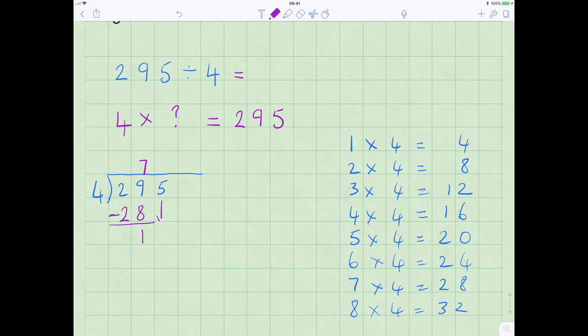So as before, the next step is to bring the 5 down and say how many times does 4 go into 15? 3 times 4 is 12, so 4 goes into 15, 3 times 4 is 12. So we're going to take the 12 away from the 15. 5 from 2 is 3, and 1 from 1 is 0.